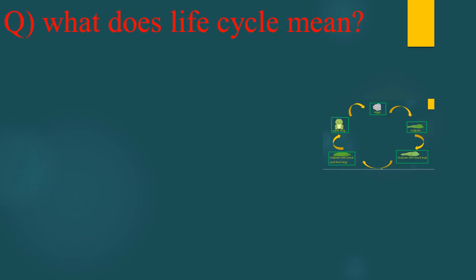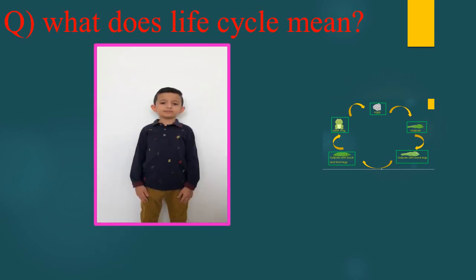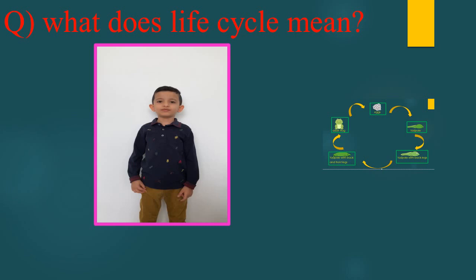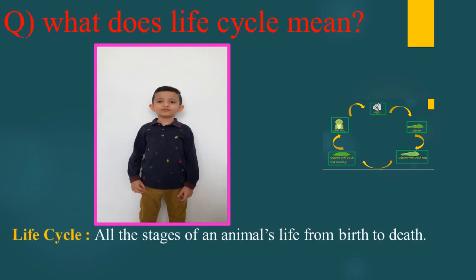Question: What does life cycle mean? Life cycle is all the stages of an animal's life from birth to death. Very good.